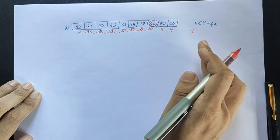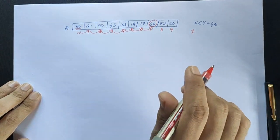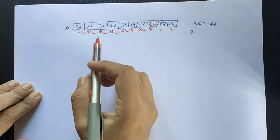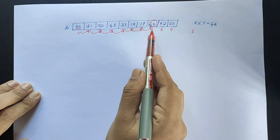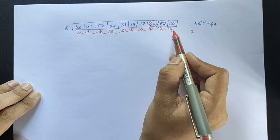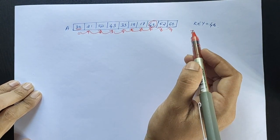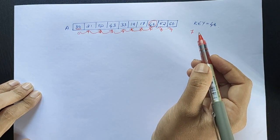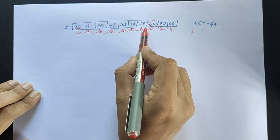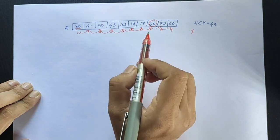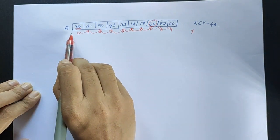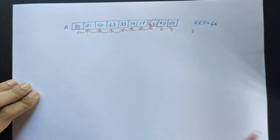We are searching for 56. We go to the third location. We don't have it at the last index. We are going to search for 56. We have a key. If the search is successful, we get the value. The value is found and we compare.